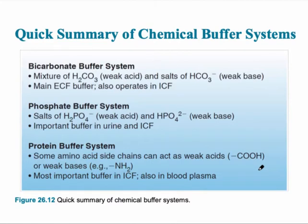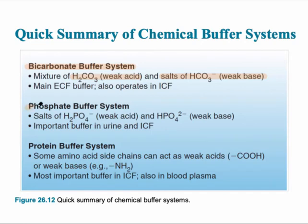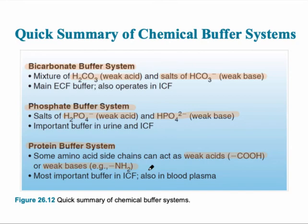This is a summary of the chemical buffer systems. The bicarbonate buffer system is a combination of a weak acid and a salt, which is a weak base — the bicarbonate — and it's the main extracellular fluid buffer. The phosphate buffer system is a combination of a weak acid as well as a weak base. And the protein buffer system contains a weak acid with a carboxyl group, and also a weak base which contains an amine group, part of amino acids.